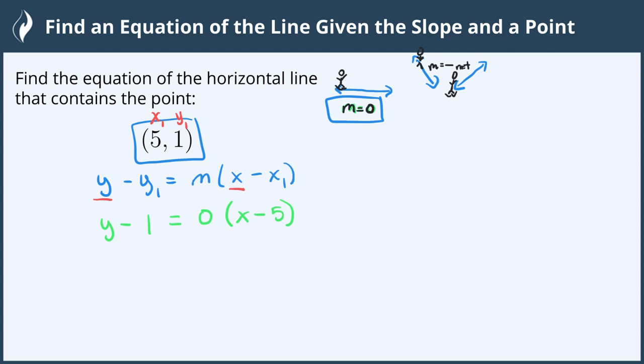Multiplying anything times zero is zero, so we get y minus 1. And I don't need to do x minus 5, I can just put zero. Although some of you may like to see the distributive property here: zero times x is zero, and zero times 5 is zero, and zero minus zero is still zero. So we get zero on the right side.